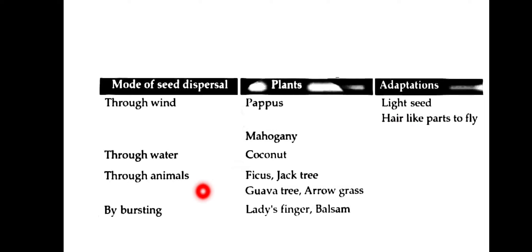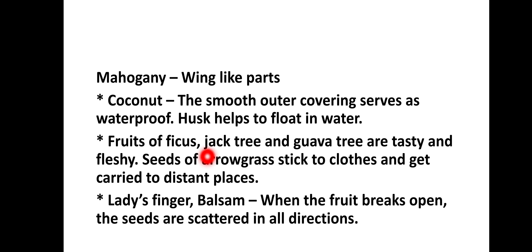Through animals: Ficus, Jack tree, Guava tree, and Arrow grass are used for seed dispersal by animals. The fruits are tasty and fleshy. Seeds of Arrow grass stick to clothes and get carried to distant places.